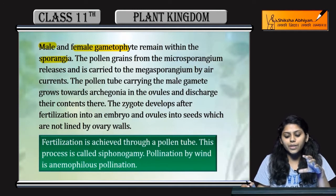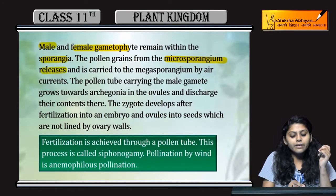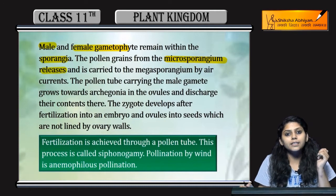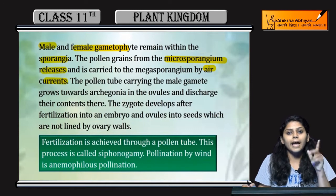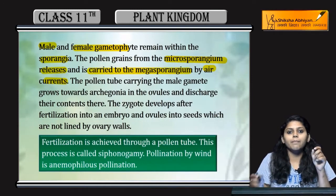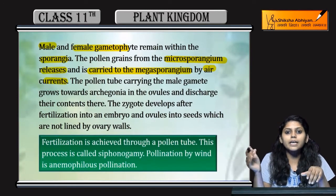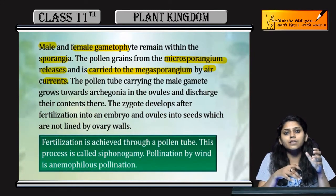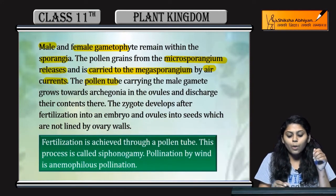Pollen grains produce hongi microsporangium se and they are released by the air currents and they will be carried to megasporangium. Microsporangium male gametophyte release karta hai, male gametes release hote hain, air currents ki help se megasporangium to the ovules.